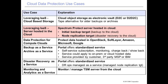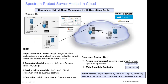We've looked at how Spectrum Protect can write backup and archive data out to a cloud storage pool. Now let's look at how we can leverage the Spectrum Protect server hosted in the cloud, utilizing infrastructure as a service. Here we have the customer site — in the first example, the customer has a physical Spectrum Protect server on site. When doing disaster recovery replication, they replicate out to a Spectrum Protect server actually hosted in the cloud, which could be either an on-premise or off-premise cloud, managed by a third party or by the customer themselves.